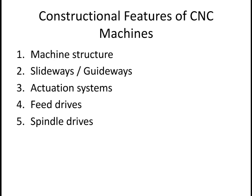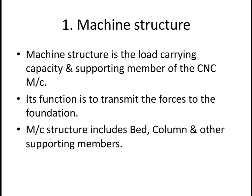Constructional features of CNC machines consist of: machine structure, slideways or guideways, actuation systems, feed drives, and spindle drives. Machine structure is the load-carrying capacity — it is the whole member and supporting member of the CNC machine. Its function is to transmit the forces to the foundation.